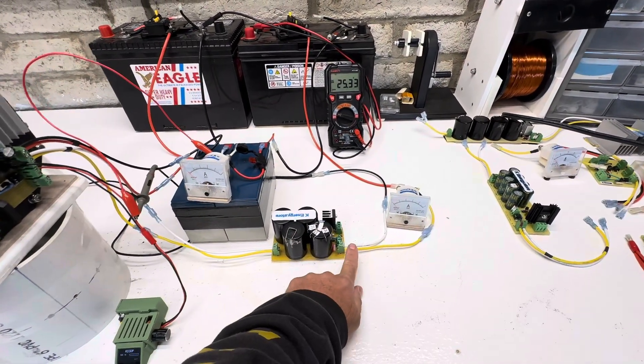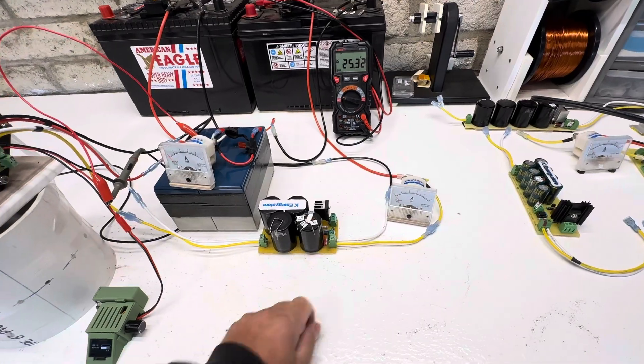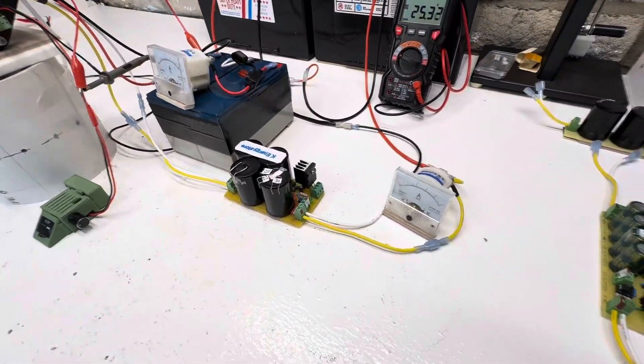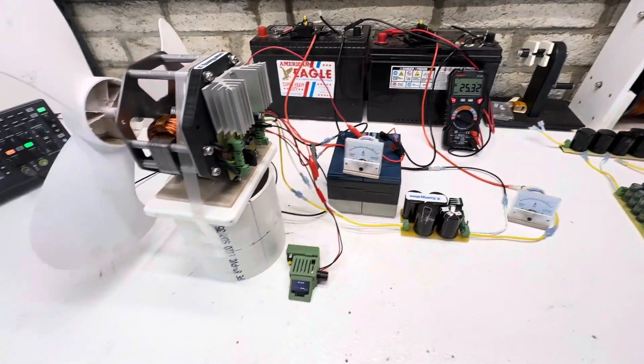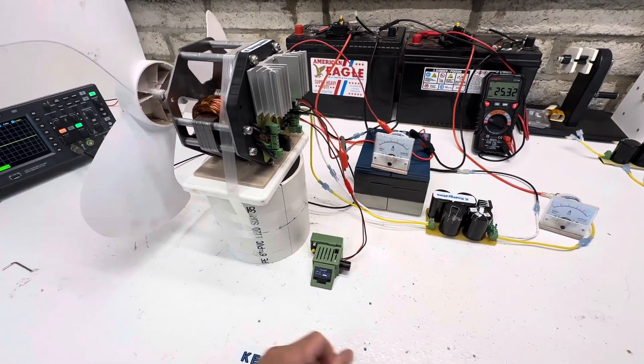And then we have a different cap dump for higher voltage. We have the cap dump set at 36-volt trigger, and then obviously we'll see the output dump on this, and then this is our input.